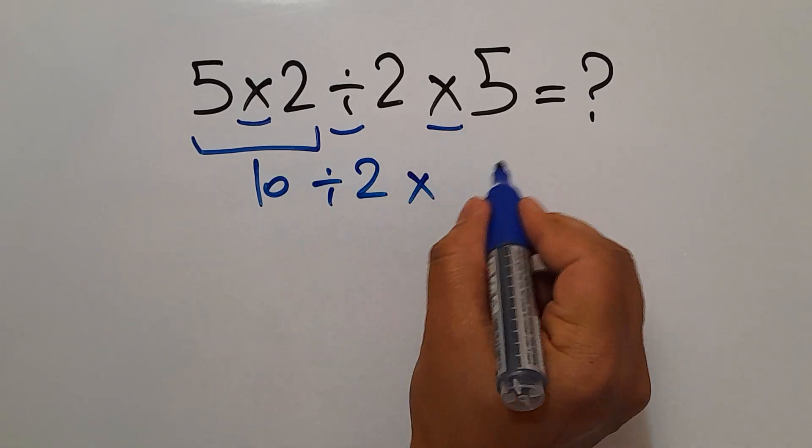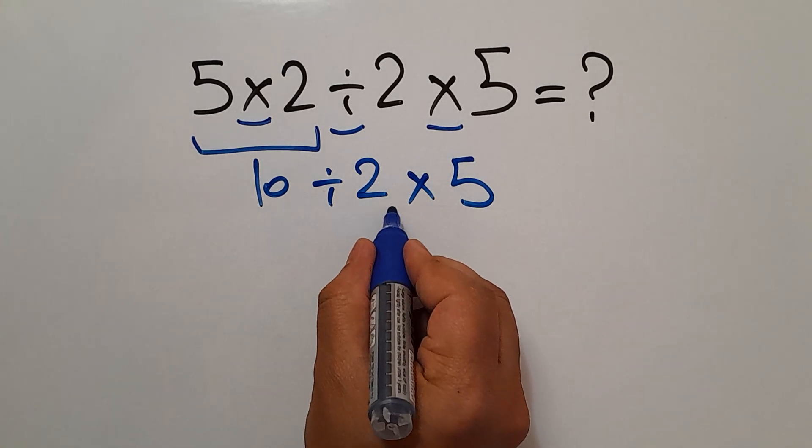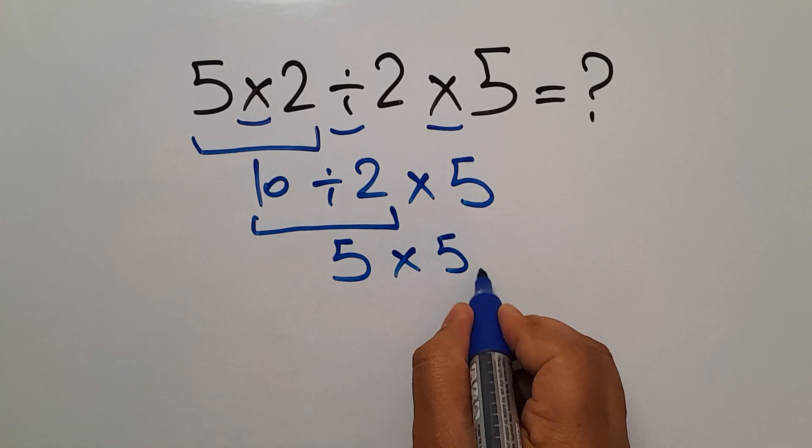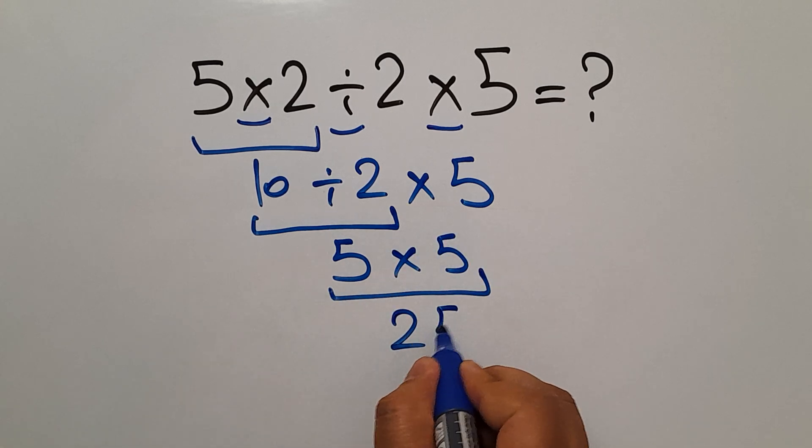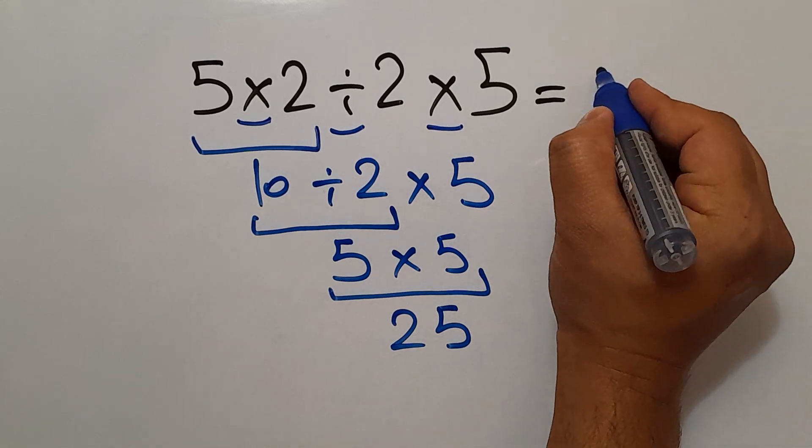10 divided by 2 gives us 5, and 5 times 5 equals 25. So our final answer to this problem is 25.